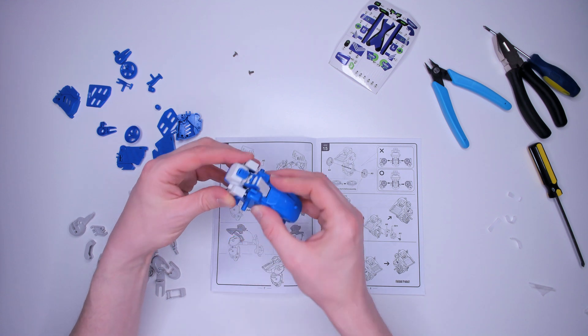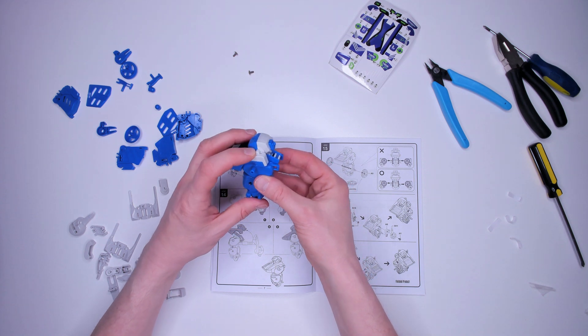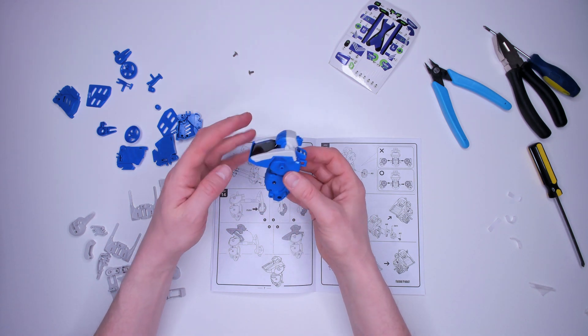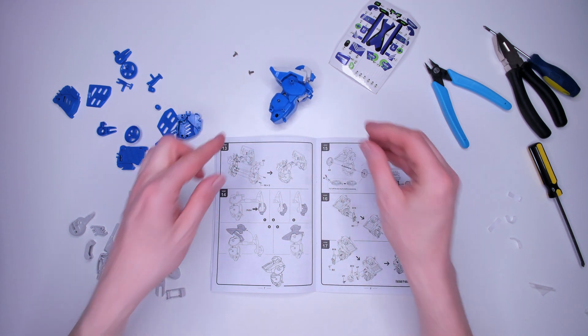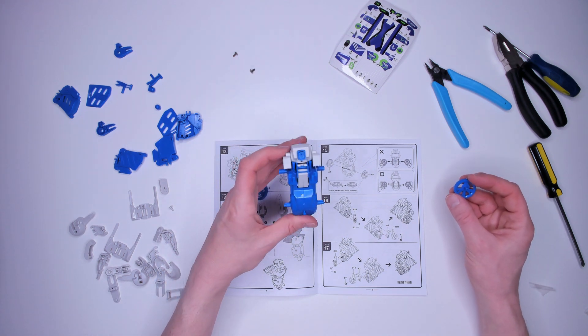The screws secure the two body parts together and stop the cogs from falling out. The instructions are telling me to fold the head into the body, it's a bit like a transformer. I reckon this is because it's a 3 in 1 kit and the other neck configurations make some of the other shapes.